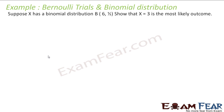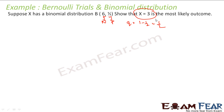Suppose x has a binomial distribution B(6, 1/2). Show that x = 3 is the most likely outcome. When you see B(6, 1/2), that means n = 6 and p = 1/2. From this I can find q also: q = 1 − 1/2 = 1/2. I am asked to show that P(x = 3) is maximum.